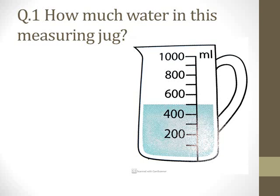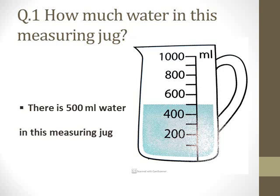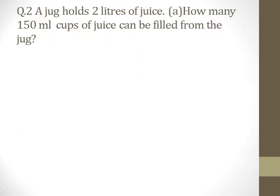I can verify: first interval is 100, second is 200 — yes, correct. After 200, the third is 300, and the fourth is 400 — yes, correct. The water is exactly at the 5th interval, which is 500 ml. So the answer to question one is: there is 500 ml of water in this measuring jug.